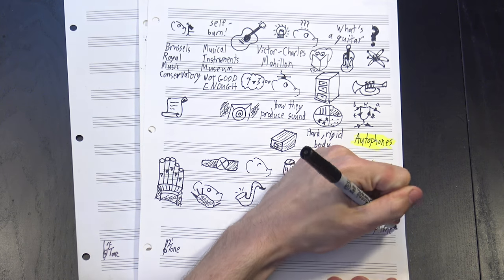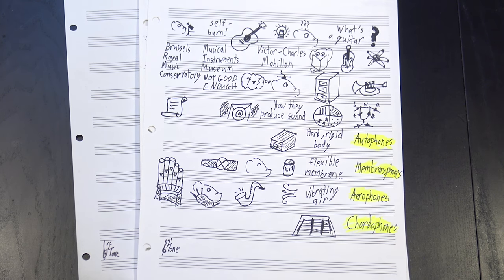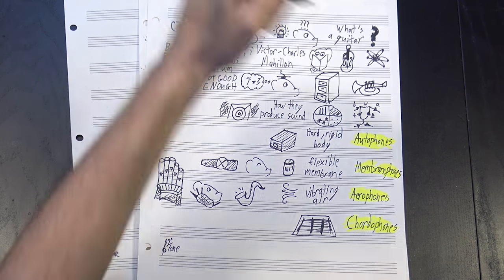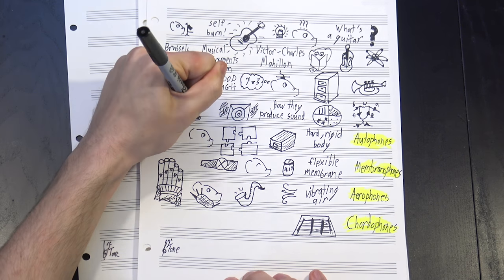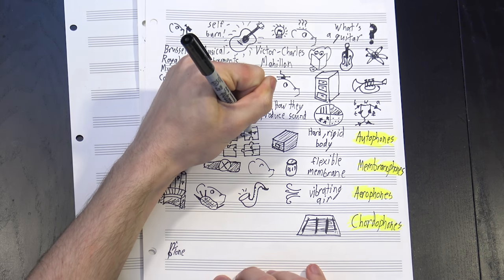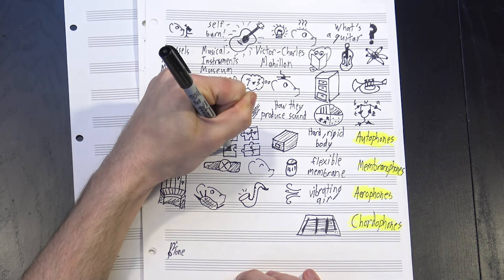And finally, there's the chordophones, which have vibrating strings like the dulcimer or the aforementioned guitar. But four categories still doesn't tell us much, so Maheen's system included a bunch of subcategories to help distinguish them further.